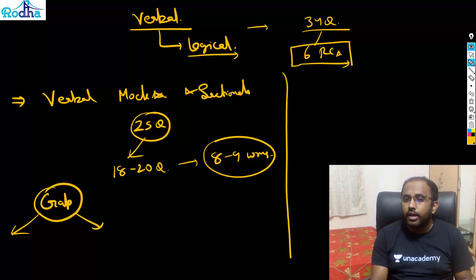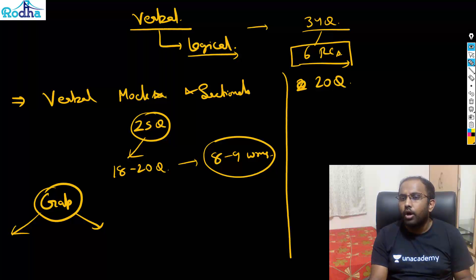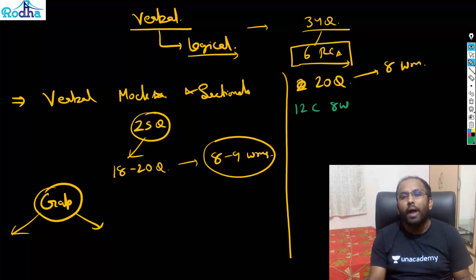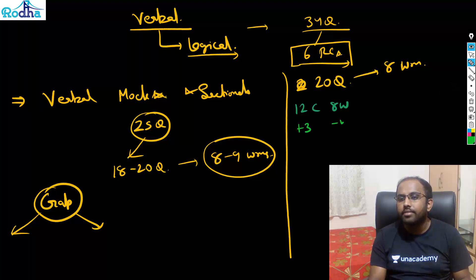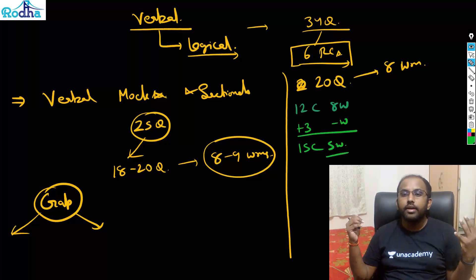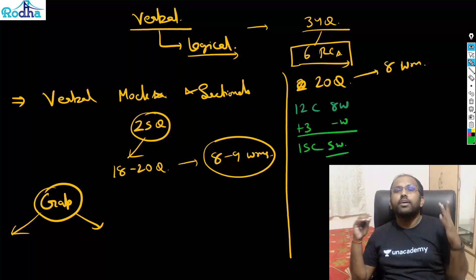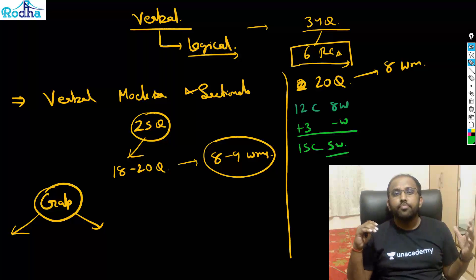It's not a great deal. In CAT, if you're attempting 20 questions in verbal and 8 are wrong — that's 12 correct, 8 wrong — that's a bad situation. But think plus 3 and minus 3: 15 correct and 5 wrong is a great situation. If you can go from 12 correct and 8 wrong to 15 correct and 5 wrong in verbal, you are in an absolutely great position.